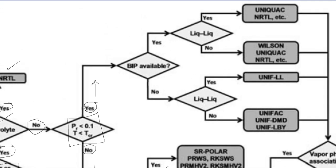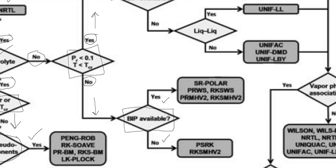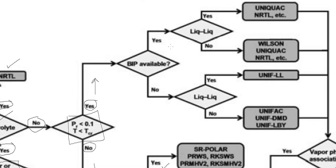For the case where it is a polar non-electrolytic system and the pressure/temperature conditions are satisfied, we again check whether binary interaction parameters are available. If they are available, we check whether it is a liquid-liquid system. If it is a liquid-liquid system, we select UNIQUAC or NRTL. If it is not a liquid-liquid system, the options are similar but Wilson is added as an additional choice.